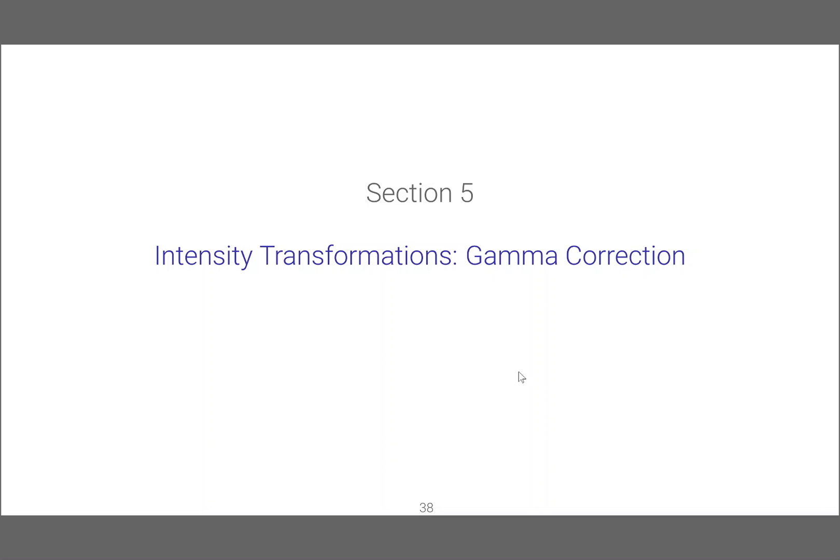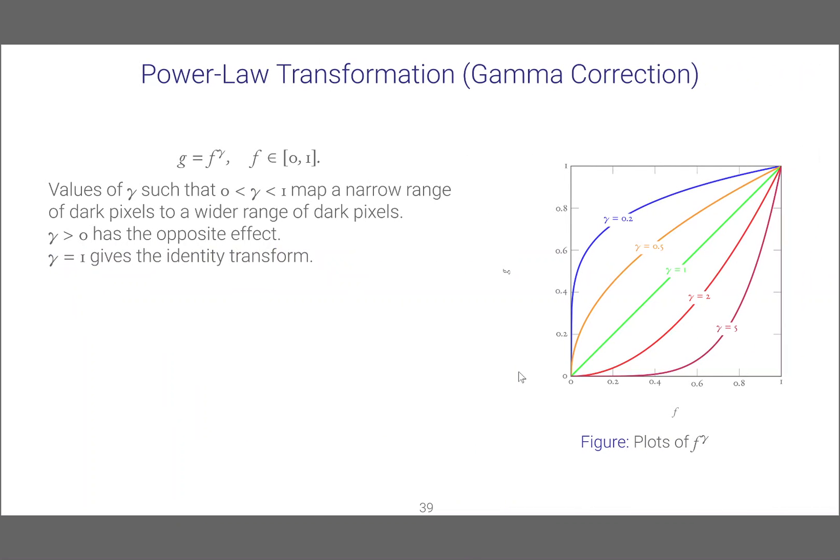Welcome everyone, we will look at gamma correction. Gamma correction or power-law transformation is an intensity transformation where we take the input image pixel values and raise them to the power of gamma and come up with the resultant image G.